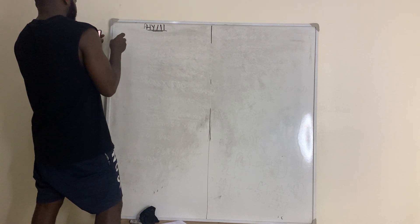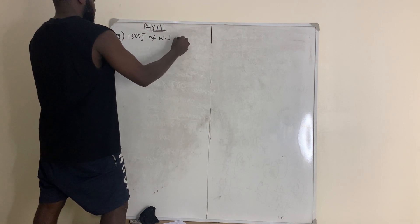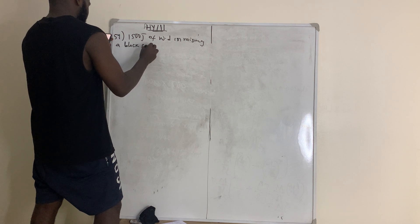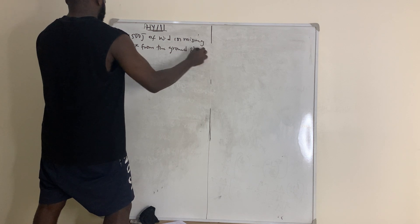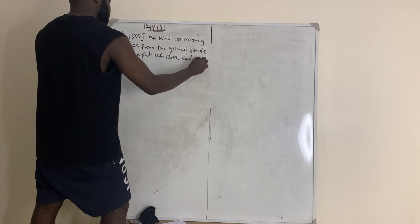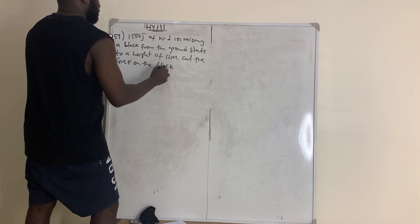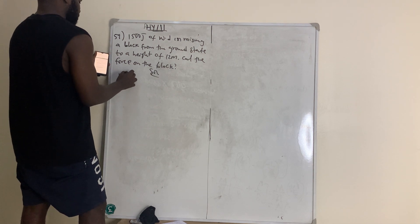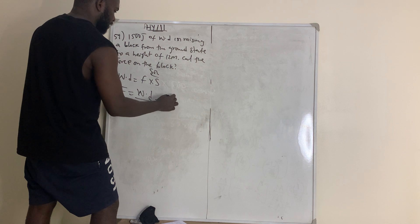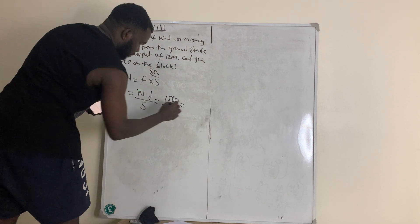Question number 59: 1500 joules of work is done in raising a block from the ground to a height of 12 meters. Calculate the force on the block. Solution: Work done = Force × distance, so Force = Work done / distance = 1500 / 12 = 125 newtons.